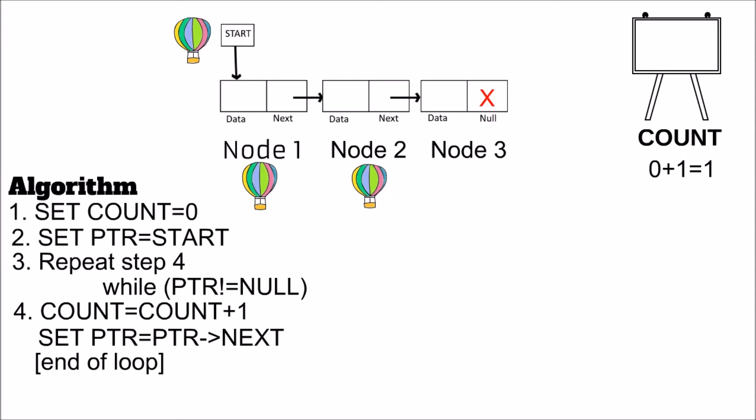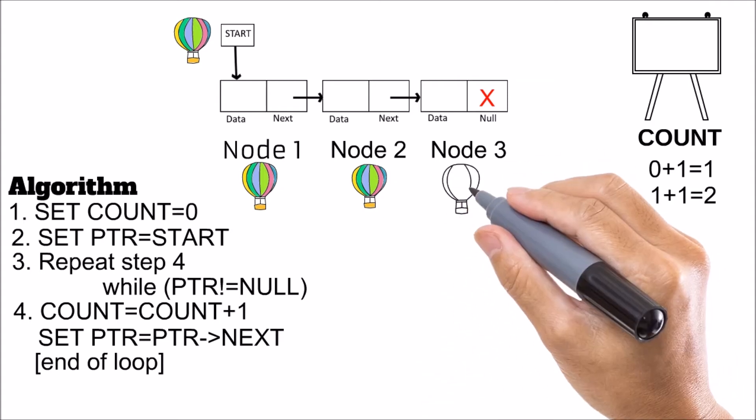So our count value is 1. Then we again increment it by 1, so 1 plus 1 equals 2. Now our count is holding the value 2. We are incrementing count but we are not yet printing the value of count because we need a final result.